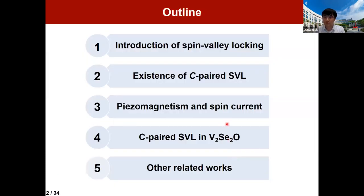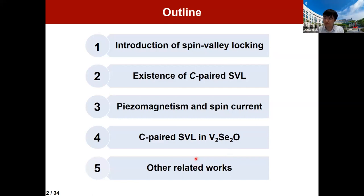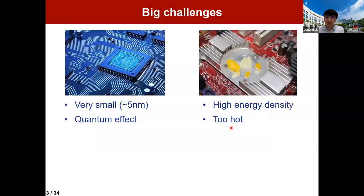The outline of this talk has five parts. First, I will try to introduce spin-valley locking in 2D materials or other systems. Then I will demonstrate the existence of C-paired spin-valley locking. I will then discuss the novel properties of this kind of C-paired spin-valley locking — basically, you can use strain to induce net magnetization, or use electric field to induce spin current, which is useful in spintronics. Then I'll discuss the material realization, and briefly mention others' related work. After I published my paper, I realized there was some prior literature mentioning similar ideas.